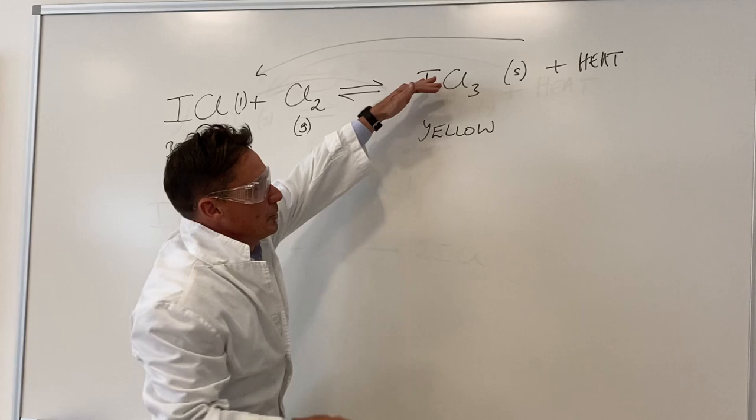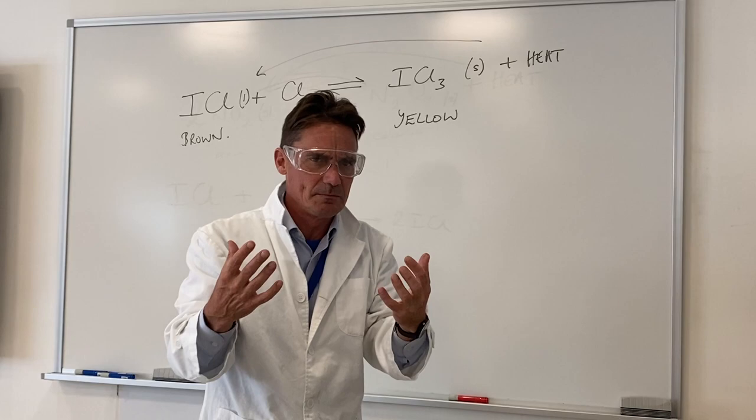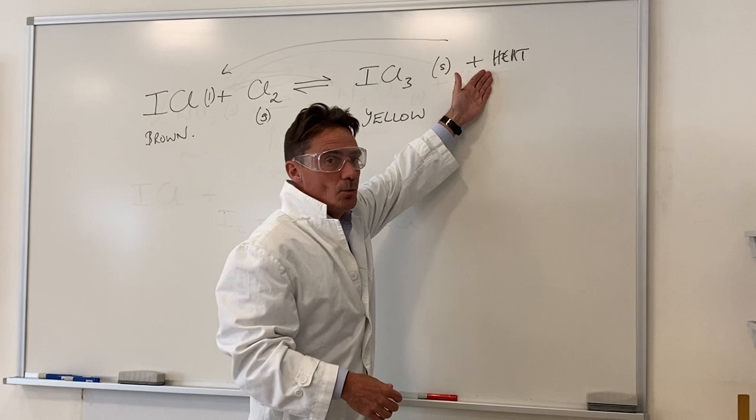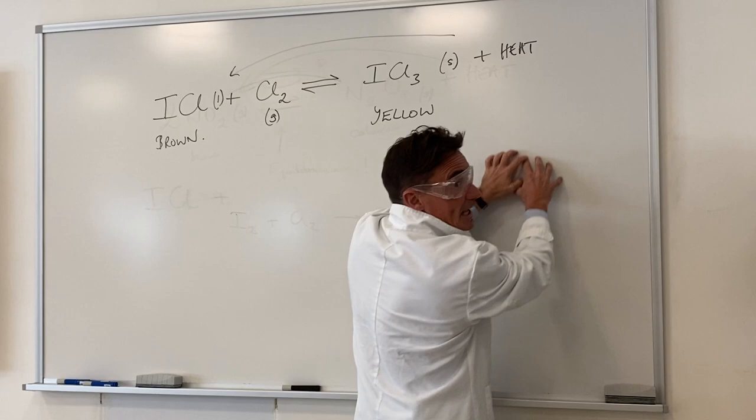So why does this go on? Well, both reactions are possible. There's a forward reaction and a backward reaction. And this is based on something called Le Chatelier's principle, which says a reaction at equilibrium will try to oppose the change you put upon it. So what does that mean? Well, if we heat it up, we're giving the endothermic route, which is this route, a better chance of success. So we're going to form more ICl.